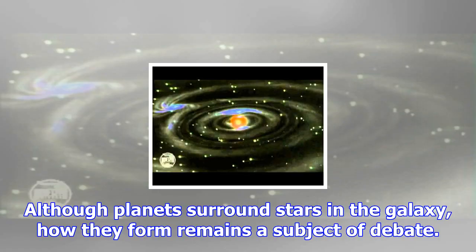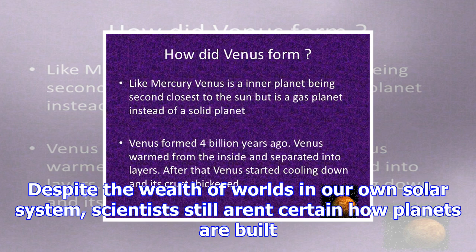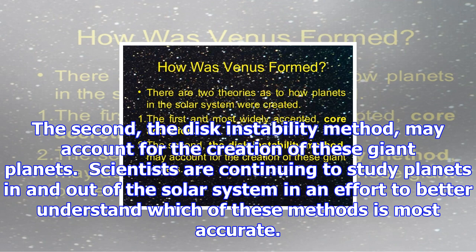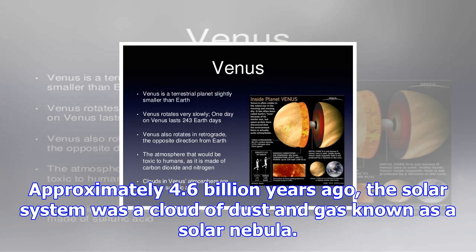Although planets surround stars in the galaxy, how they form remains a subject of debate. Despite the wealth of worlds in our own solar system, scientists still aren't certain how planets are built. Currently, two theories are duking it out for the role of champion. The first and most widely accepted theory, core accretion, works well with the formation of terrestrial planets like Venus but has problems with giant planets. The second, the disk instability method, may account for the creation of these giant planets. Scientists are continuing to study planets in and out of the solar system in an effort to better understand which of these methods is most accurate.